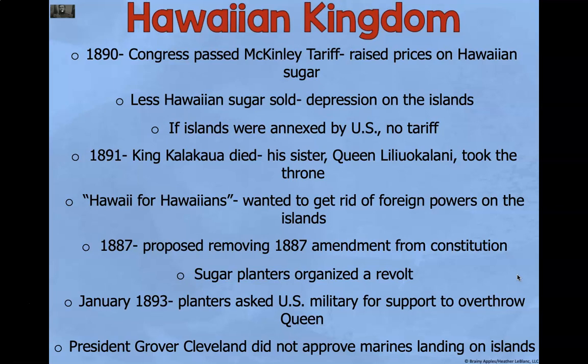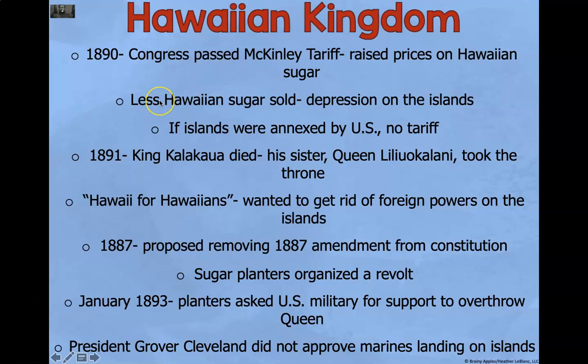In 1890, Congress passed the McKinley Tariff, which raised prices on Hawaiian sugar. This was bad for the Hawaiian Islands because less Hawaiian sugar was sold. A tariff is a tax on imports, so any sugar coming from Hawaii into the United States was now more expensive. Business owners in the US would not purchase it. Less Hawaiian sugar was sold, causing a depression on the islands. If the islands were annexed by the US, there was no tariff.